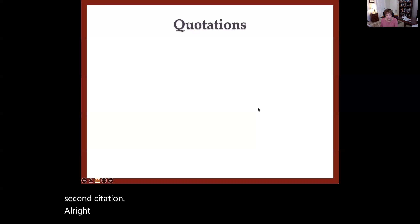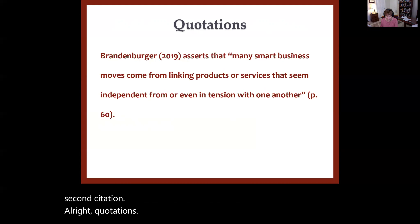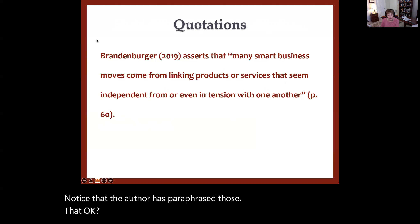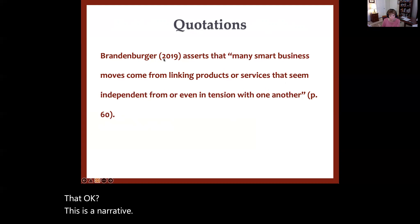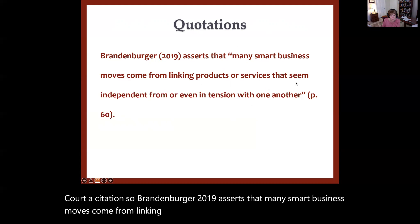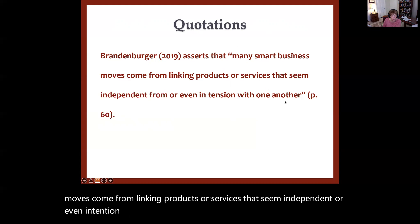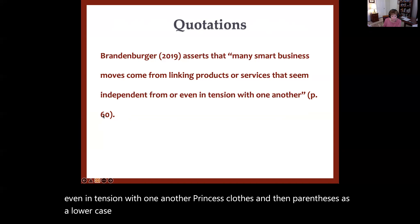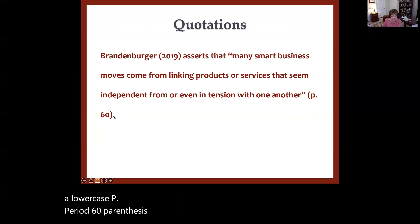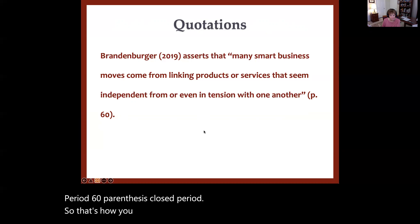Now, quotations. Here's a narrative citation with a direct quote: Brandenberger (2019) asserts that 'many smart business moves come from linking products or services that seem independent from or even in tension with one another' (p. 60). Notice the period does not come within the quotation mark. That's how you do a narrative quotation.